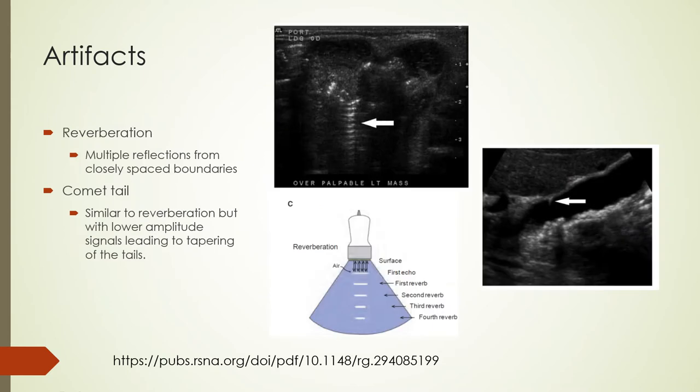A reverberation artifact arises when an object has two closely spaced, highly reflecting boundaries. Sound reflects multiple times between the boundaries and appears to come from different reflectors at different depths, causing reverberation artifacts.